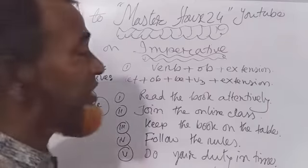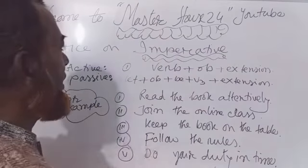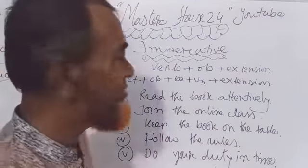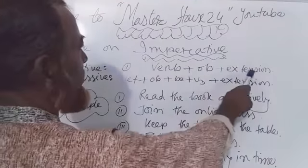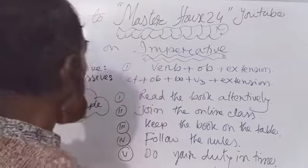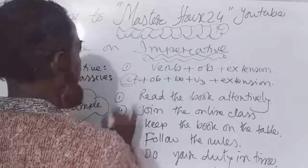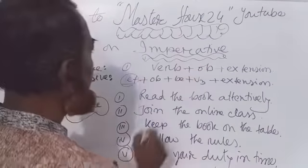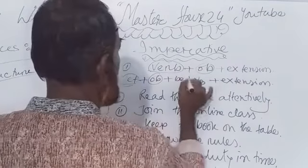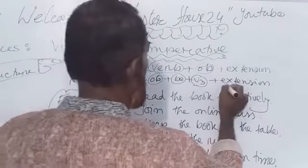Let me explain how we can understand this. I hope you have an idea about the imperative sentence. First, the imperative sentence structure is: verb plus object plus extension. At the time of making passive voice, we should write 'let' first, and then we write the object here, and the main verb turns into 'be' plus past participle, plus extension.